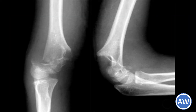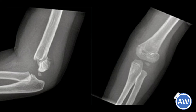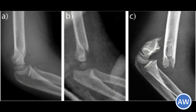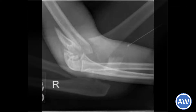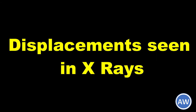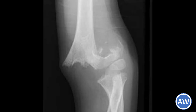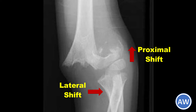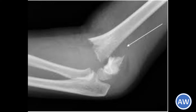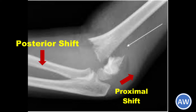When looking at the radiological examination, most often it is easy to diagnose the fracture because of the wide displacement. In an anterior-posterior view, one can see the proximal shift, medial or lateral shift, and rotation of the distal fragment. In the lateral view, one can see the proximal shift, posterior shift, and rotation of the distal fragment.